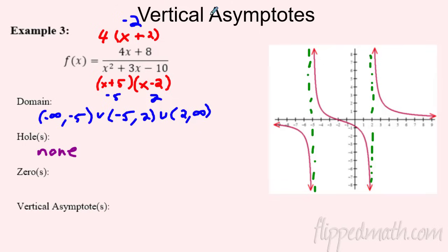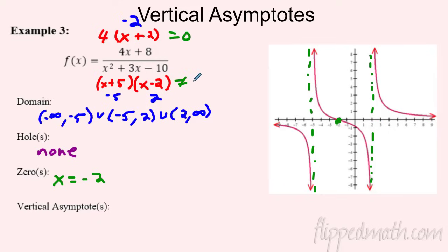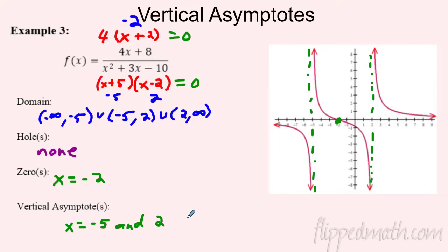For zeros, the top equals zero when x = -2 — and that matches the graph, there it is. Vertical asymptotes occur where the denominator equals zero and nothing canceled: at x = -5 and x = 2. To summarize: factor everything — if a factor doesn't cancel, it's a vertical asymptote; if it does cancel, it's a hole.